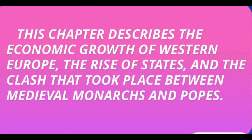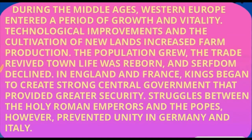This chapter describes the economic growth of Western Europe, the rise of states, and the clash that took place between medieval monarchs and popes. During the Middle Ages, Western Europe entered a period of growth and vitality. Technological improvements in the cultivation of new lands increased farm production. The population grew, trade revived, town life was reborn, and serfdom declined. In England and France, kings began to create strong central governments that provided greater security. Struggles between the Holy Roman Emperors and the popes, however, prevented unity in Germany and Italy.